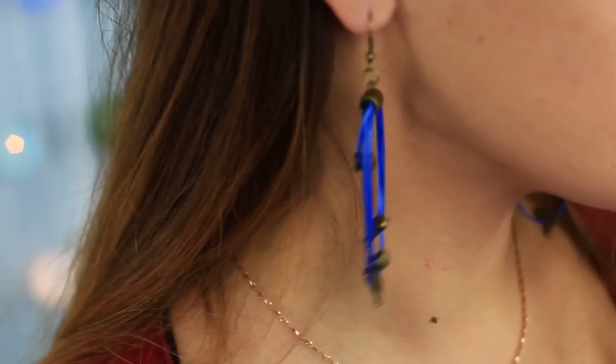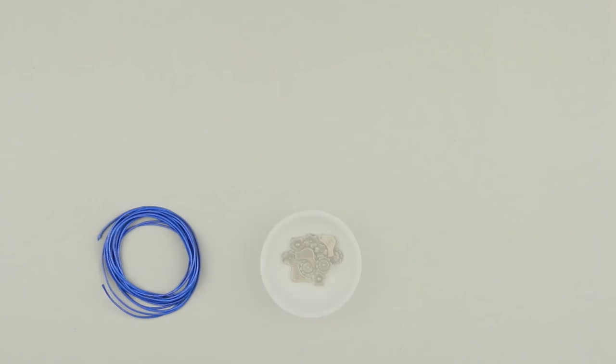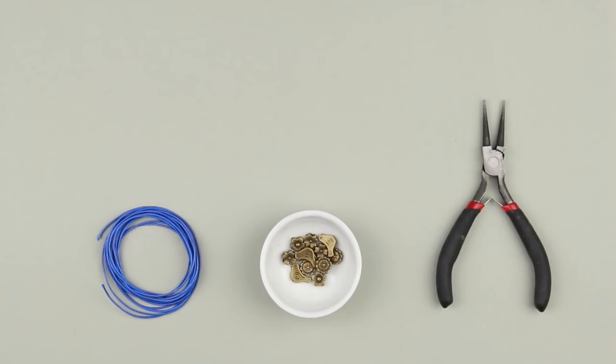In this video, we'll show how to make multi-level leather cord earrings with metal charms. We'll need blue leather cord, metal charms, round nose pliers, two French hooks, two jump rings, and two tube connectors.